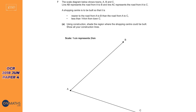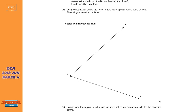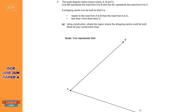Finally, looking at OCR's offering — we're given a construction and loci question based on real-world stuff. It's talking about towns A, B, and C: AB represents a road between town A and B, and AC represents a road between town A and C. It wants us to shade the region where a shopping center can be placed, given two conditions: the shopping center has to be less than 14 kilometers from town C, and it needs to be nearer to road AB than road AC.